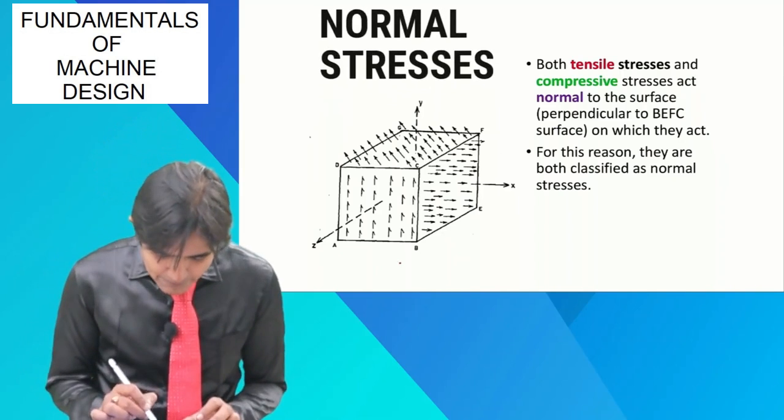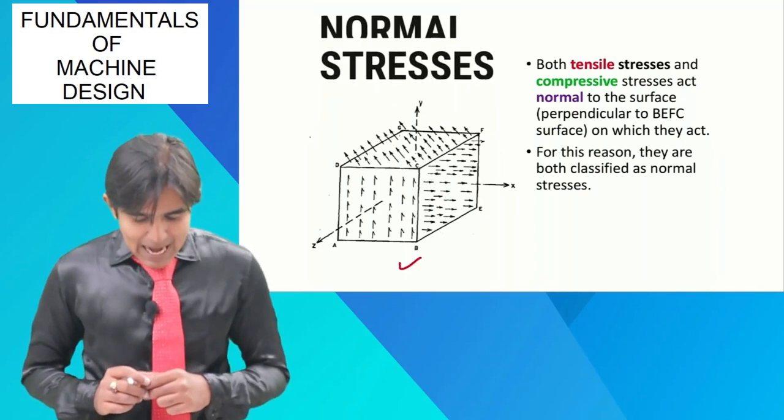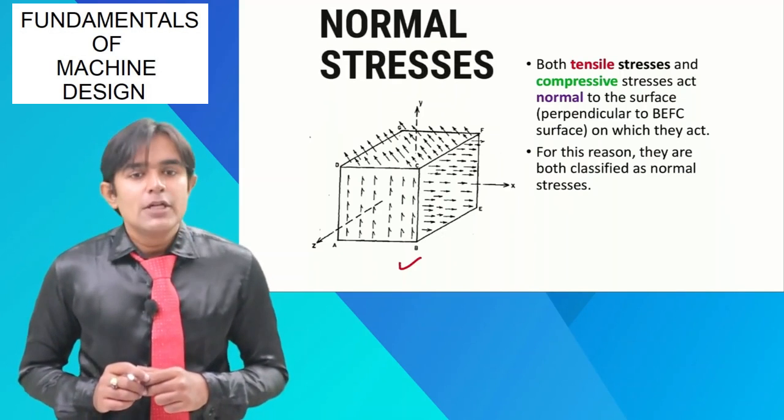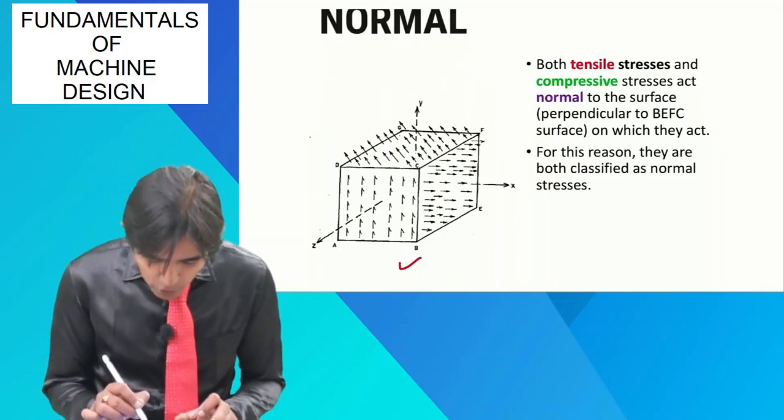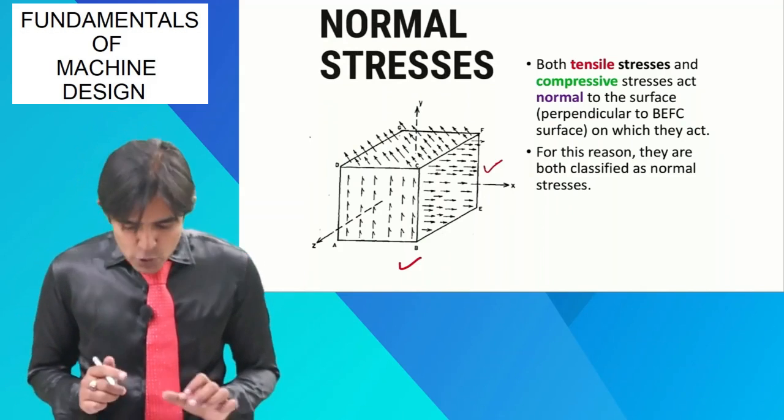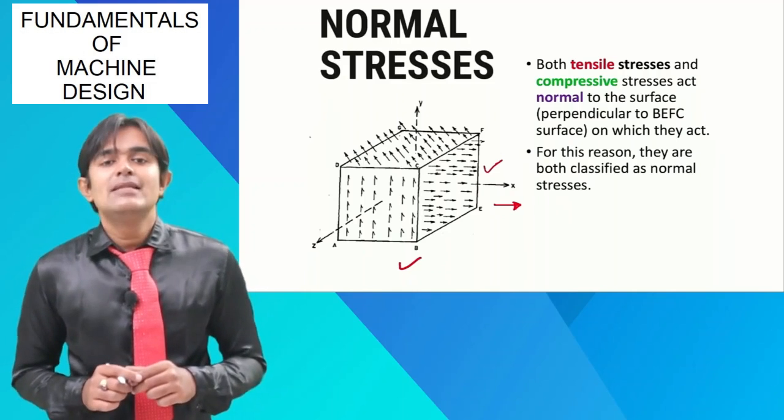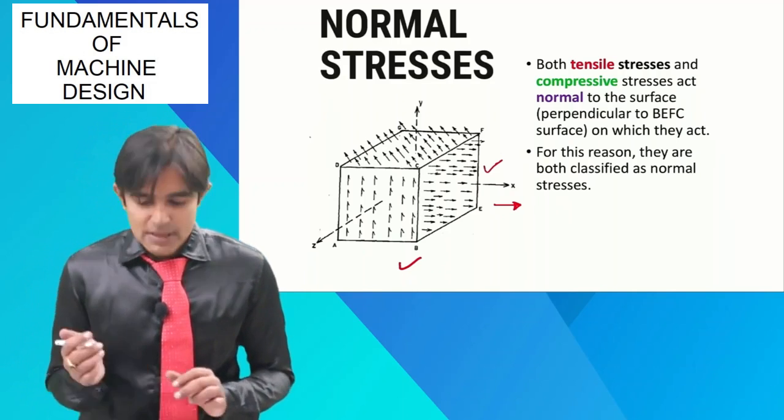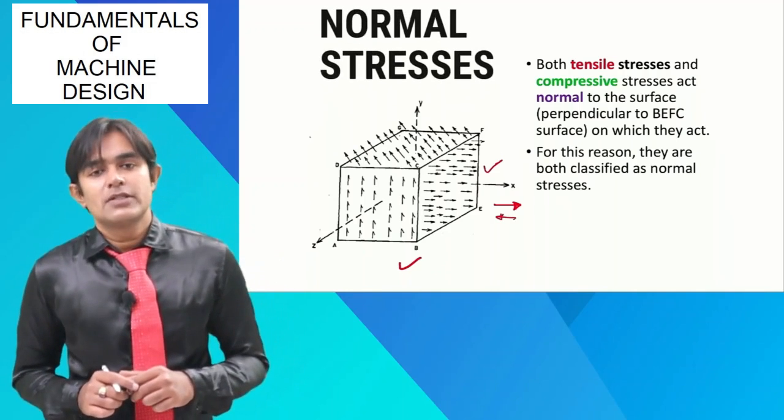This diagram has several phases: ABCD, EFGH, and EFCB. Now if I talk about this phase BEFC, you can see the direction of stress is given in this direction. These are tensile stresses. But if the forces are given in this direction, they will become compressive stresses.